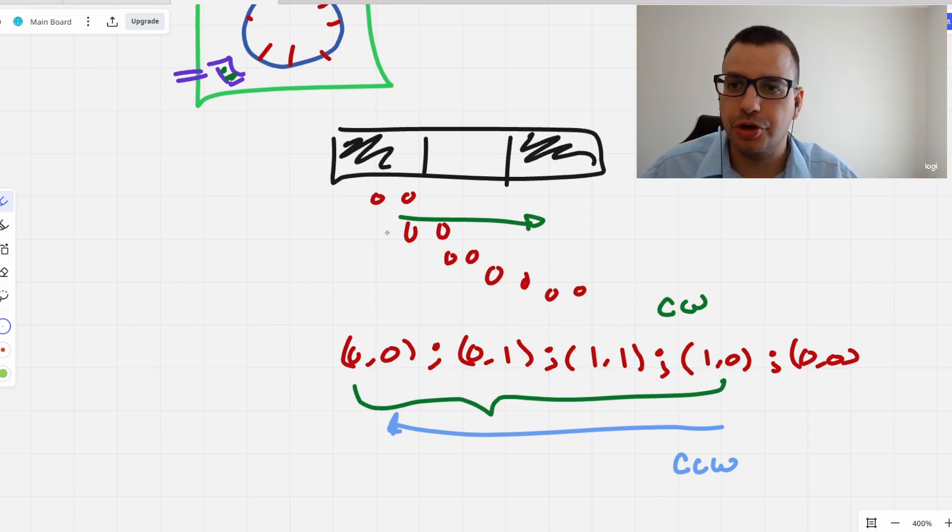So that's kind of the idea behind quadrature encoding. It feels kind of confusing the first time you do it, but then you look at it like, oh, I'm looking for that pattern. If the pattern's reversed, then it's going the other direction. Not too bad. So we have that. One other thing I want to talk about.